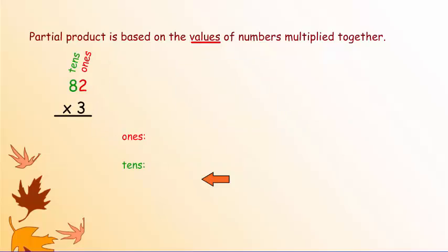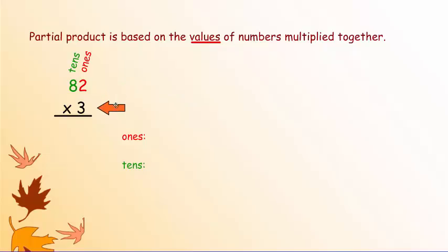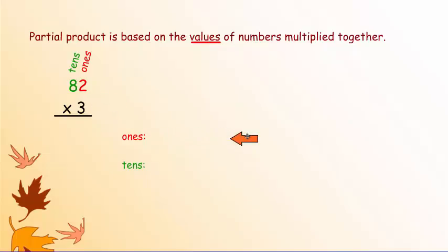Let's look at another problem. We're going to look at the values of the places. This problem states 82 times 3. The 2 is in the ones place and so is the 3. Down below, where it says 'ones,' write the problem out just like we did above: 2 times 3, then write what it's worth. Its value is 6.